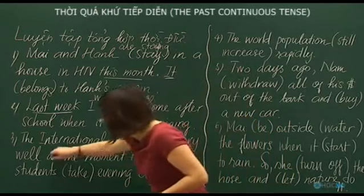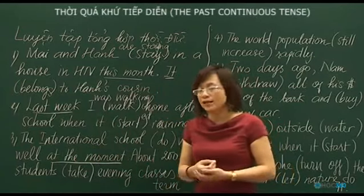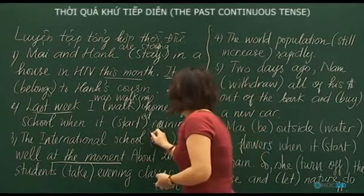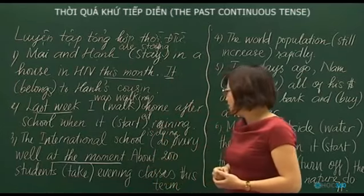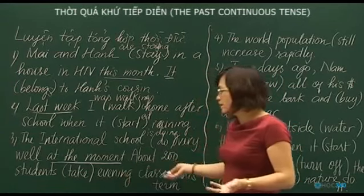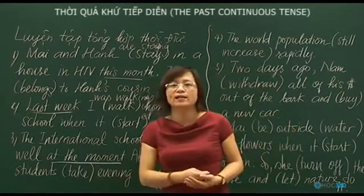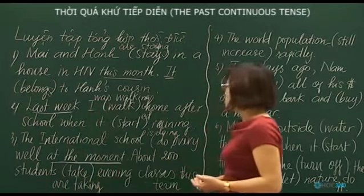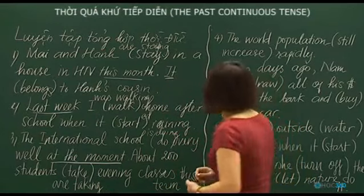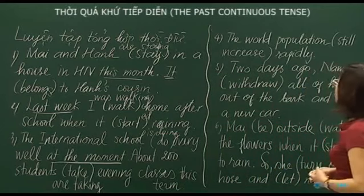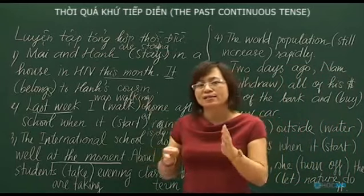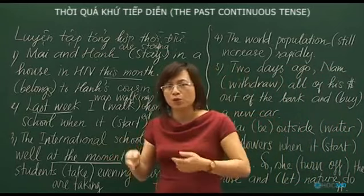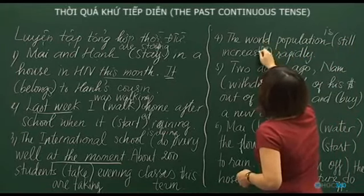Sentence 3: 'At the moment' — we think immediately of present continuous. 'The international school is doing very well at the moment.' About 200 students — plural — 'are taking evening classes this term.' Sentence 4: 'The world population is still increasing rapidly' — describing a trend or ongoing change, so present continuous: 'is still increasing.'